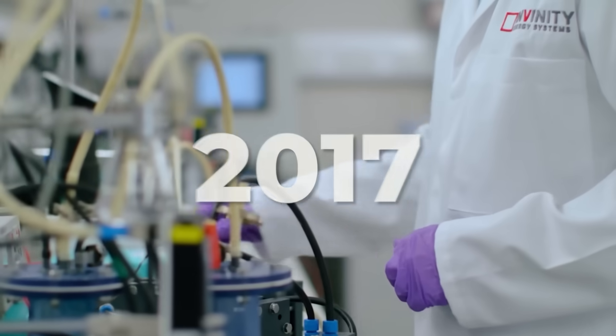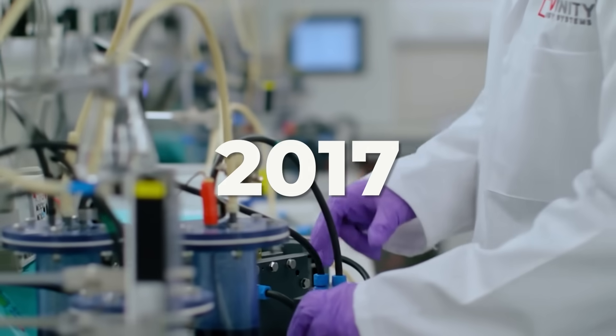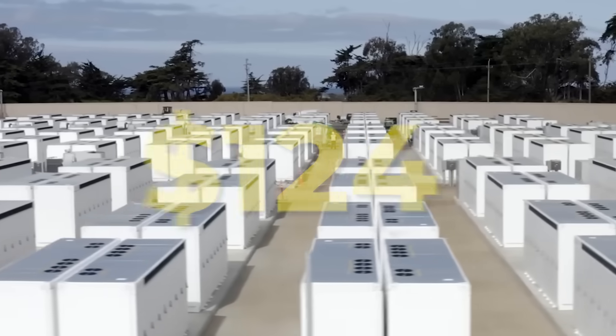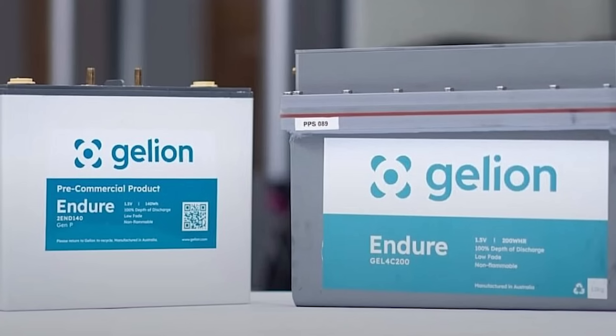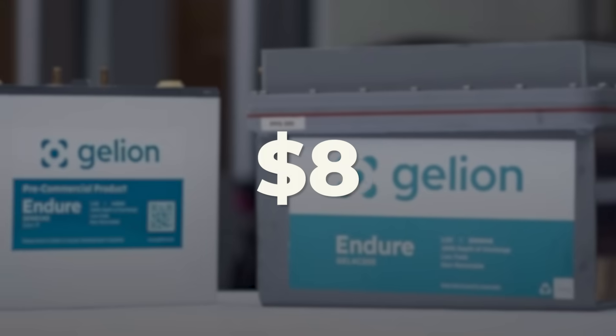Raw materials? A 2017 study estimated vanadium flow batteries at around $124 per kilowatt hour in chemical costs. Zinc bromine? Just $8.